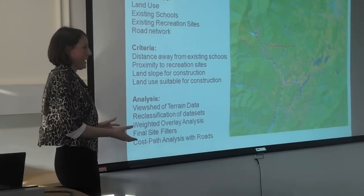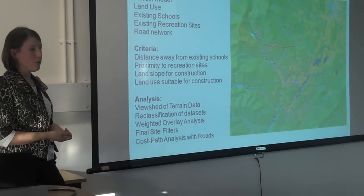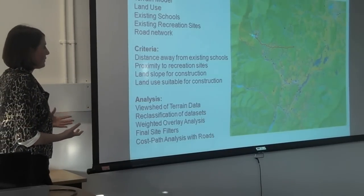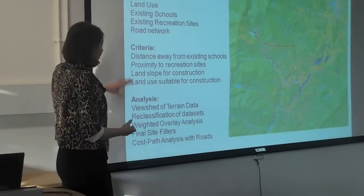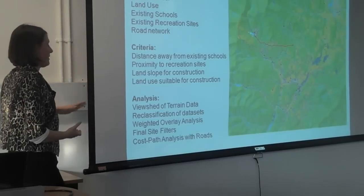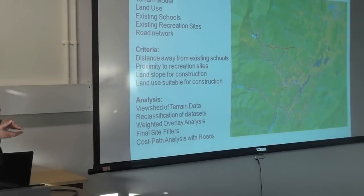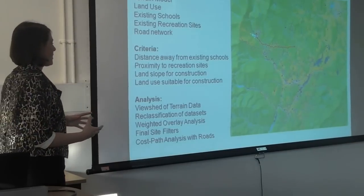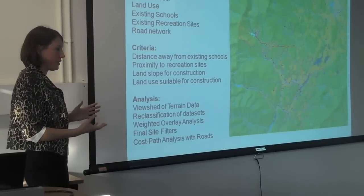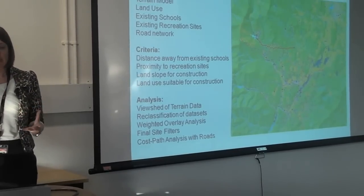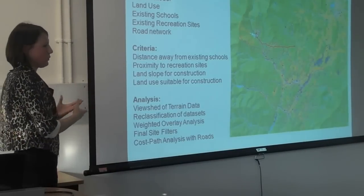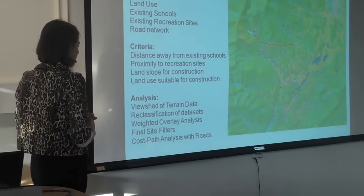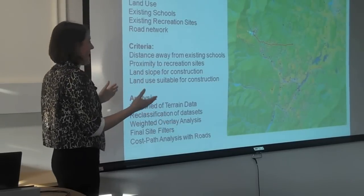Data that can be input into GIS is now widely available — there's lots of open, free data online. In Great Britain we're really lucky because the Ordnance Survey has put all its mapping data online and it's free for students to use, both 2D and 3D data sets. For this exercise, I gave the students the data and the criteria. They had to locate a new school a certain distance away from existing schools, fairly close to a recreation site, with land suitable for construction — so a certain slope factor — and land that was actually available, meaning they couldn't build in a lake or demolish residences.